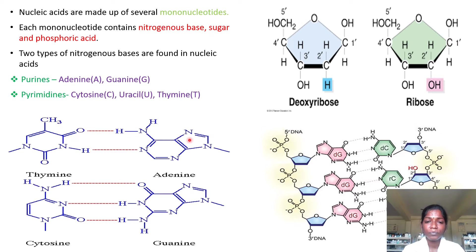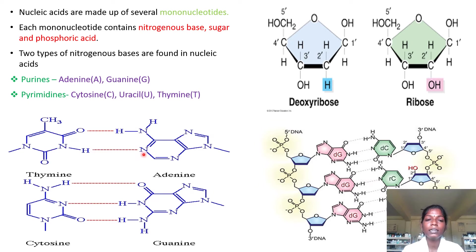Now we will see the structure of purines and pyrimidines. The purine contains a six-membered ring structure fused with a five-membered imidazole ring. The pyrimidine contains only the six-membered ring structure. Purines always bind with pyrimidines in nucleic acids. Adenine, a purine, always binds with thymine via a double bond. Guanine, a purine, always binds with cytosine via a triple bond.